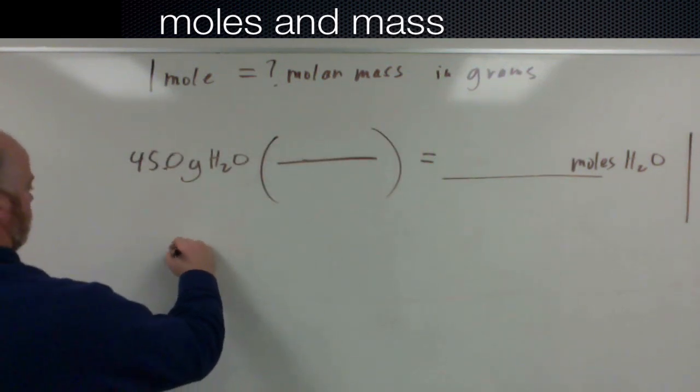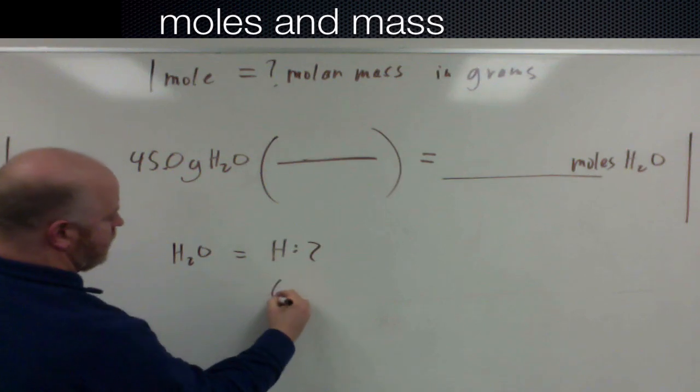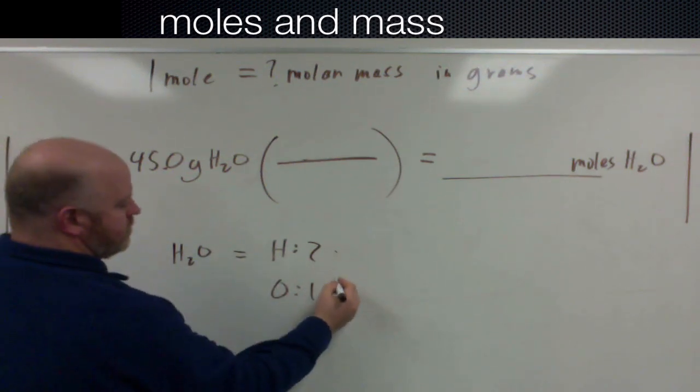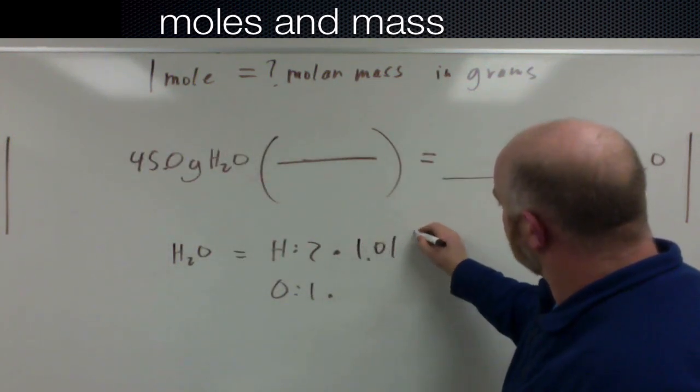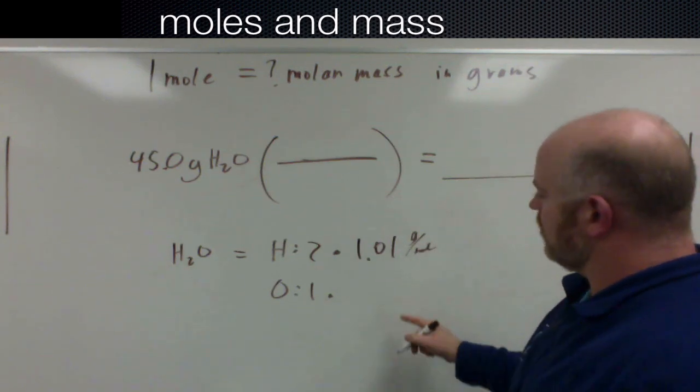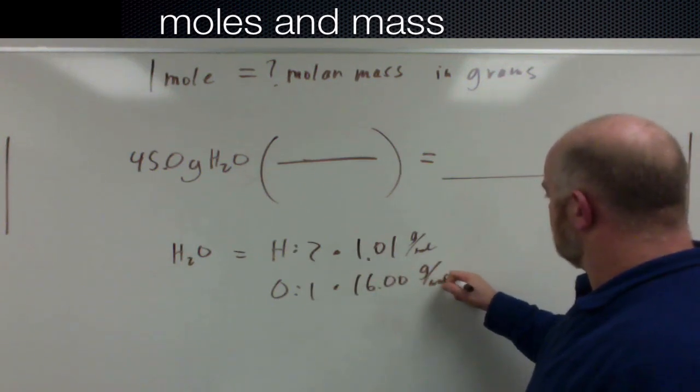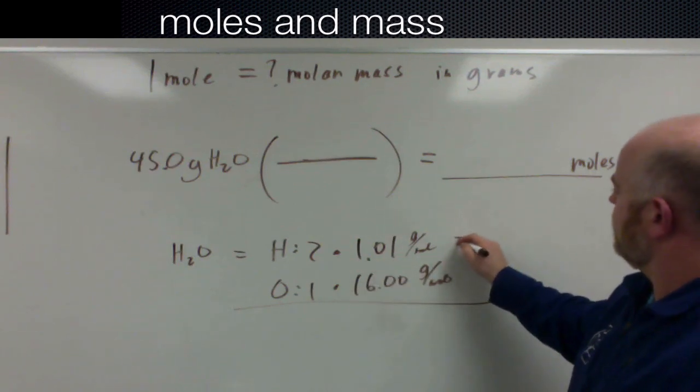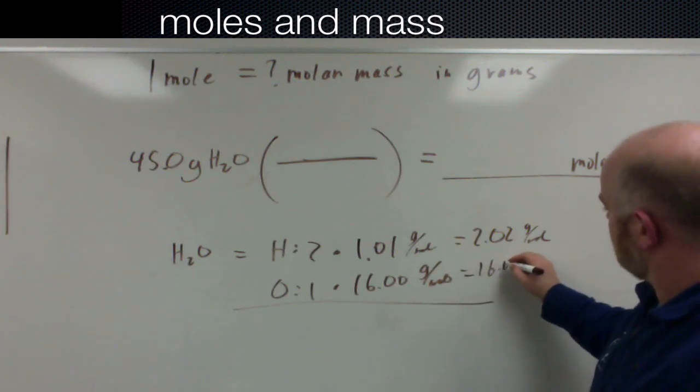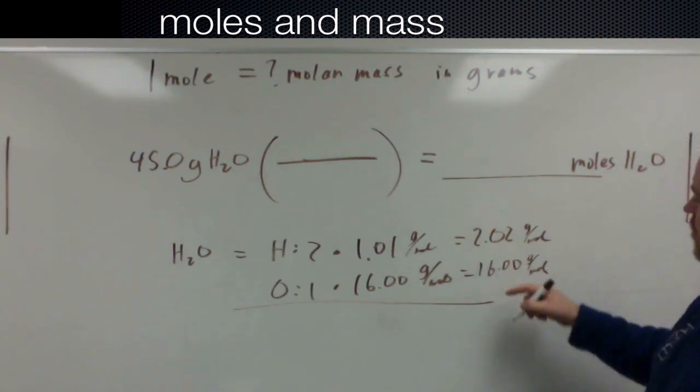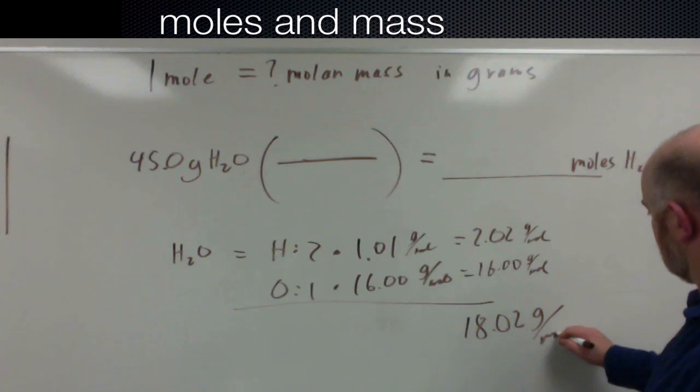So I want to say for water I have two hydrogens, I have one oxygen. Hydrogen's molar mass if we look it up is 1.01 grams per mole. Oxygen's molar mass, 16.00 grams per mole. So 2 times 1.01 is 2.02 grams per mole. Oxygen is still 16 grams per mole and together we get 18.02 grams per mole.